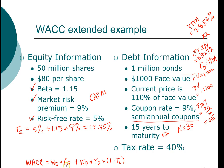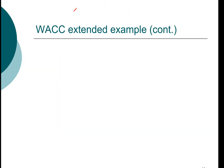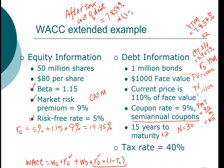So far we have computed the cost of equity and the cost of debt. Notice that interest is tax deductible, so the after-tax cost of debt is the cost of debt times one minus the tax rate. The before-tax cost of debt is 7.854 percent, times one minus the tax rate of 40 percent, giving us an after-tax cost of debt of 4.712 percent.